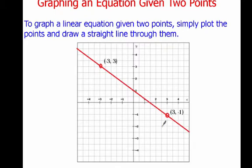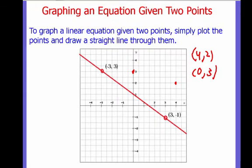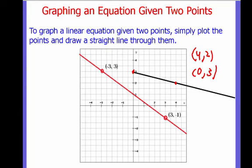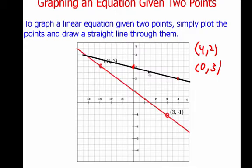For example, I've got this line here that was drawn between negative 3, 3 and 3, negative 1. But say I gave you the points 4, 2 and 0, 3. All I'd have to do is plot 4, 2 — here's 4, here's 2, there's a point — and then 0, 3 — here's 0, here's 3, there's another point. To graph this equation, I just draw a straight line between them. Notice that I make the line extra long, because the line has to go on and on forever in both directions.